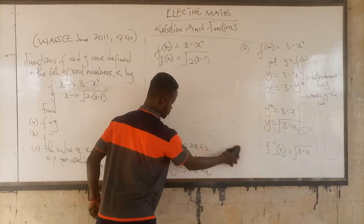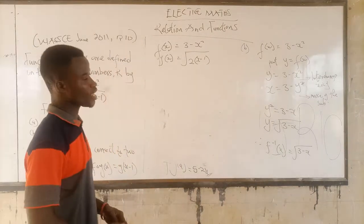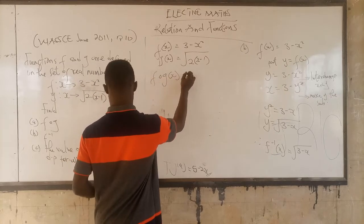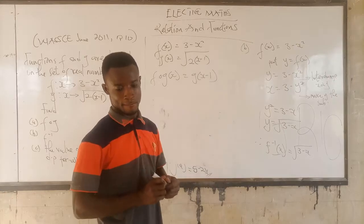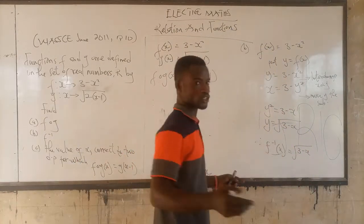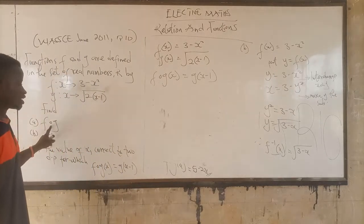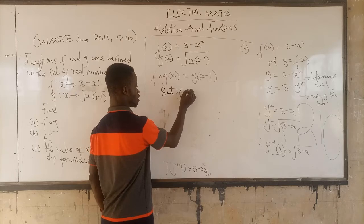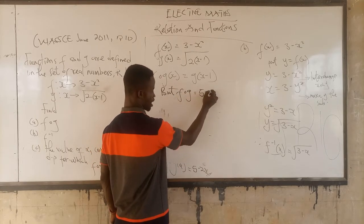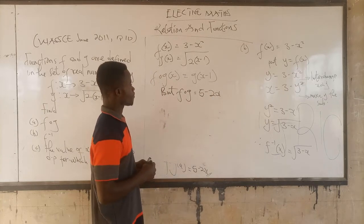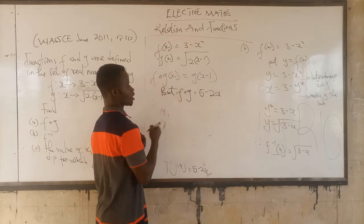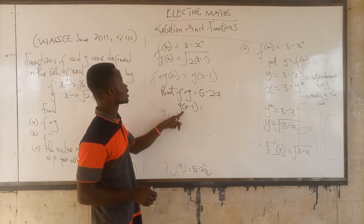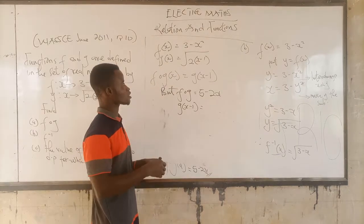Now for part c, we have to find the value of x for which fog = g(x minus 1). We already know fog = 5 minus 2x from part a. Now we need g(x minus 1): take g(x) and wherever you see x, put x minus 1 there. So g(x minus 1) = square root of 2 multiplied by (x minus 1), minus 2.